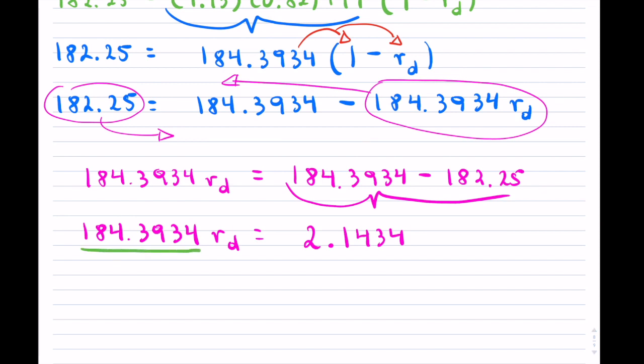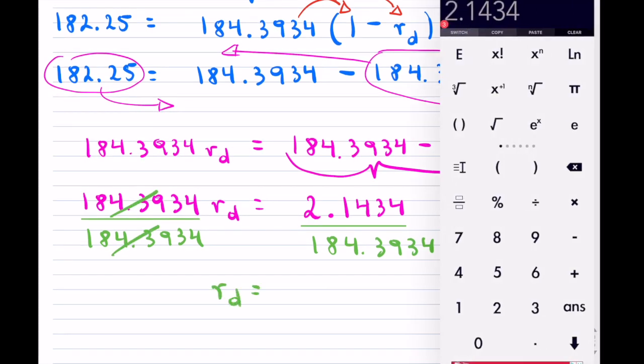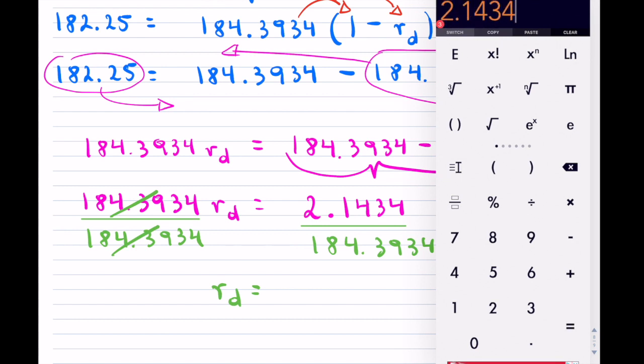And now I will divide both sides because I don't want to have this 184.3934. So I'm going to divide both sides and that will give me my answer. So I do that. That's gone. And now rd equals and let's see what that actually will be. So we're going to divide by 184.3934.